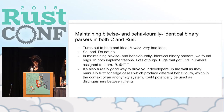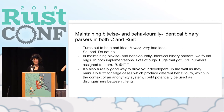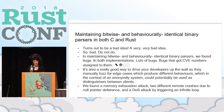Unicode bugs. It's also a really good way to drive your developers up the wall as they manually fuzz for edge cases which produce different behaviors. In the context of an anonymity system, it's really important that if someone compiled with Rust or with only C, their behaviors aren't different — even down to things like if the Rust version does more allocations, you might be able to learn about the machine someone is running. We found a memory exhaustion attack, two different remote crashes due to null pointer dereference, and a DOS attack triggered by an infinite loop.